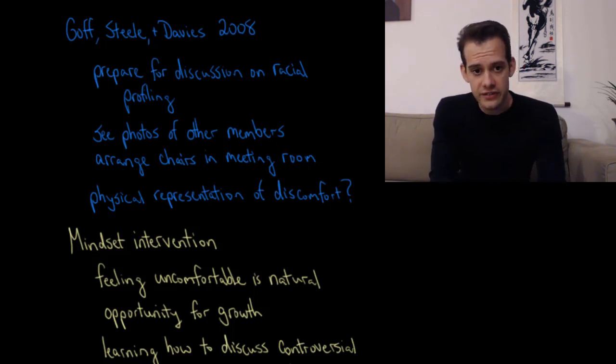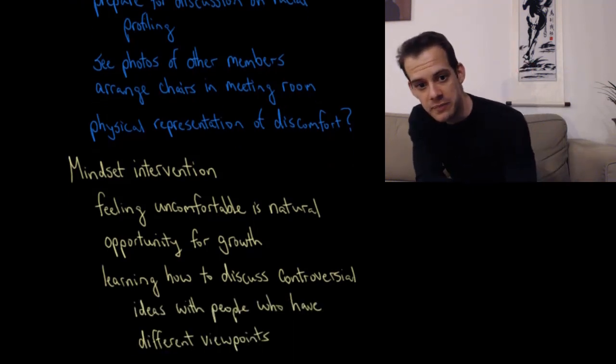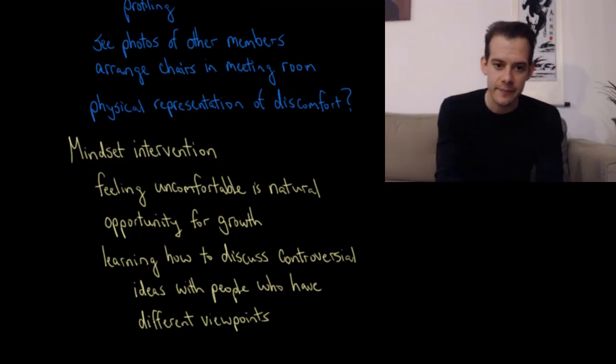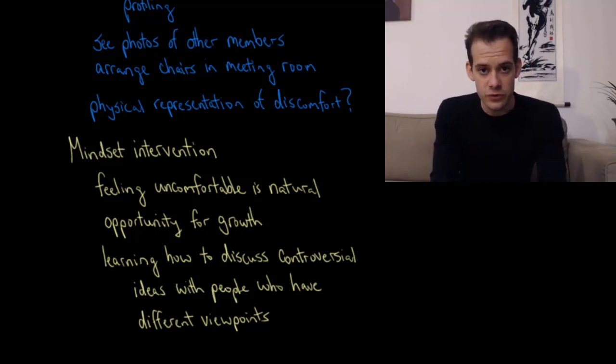So in this series of studies, the researchers were also able to find a way to reduce this gap between the chairs. And this was an intervention that was based on Carol Dweck's work on mindset. Because what they did was they encouraged the students to think about this discussion in a particular way. They encouraged them to think that feeling uncomfortable is natural, that this was going to be a difficult issue to talk about, and people might have some emotional responses to it. And so it was perfectly normal to feel a little nervous before the discussion. And that they should view this as an opportunity for growth. That they could learn how to get better at discussing controversial ideas. And get better at discussing these ideas with people who might have different viewpoints.